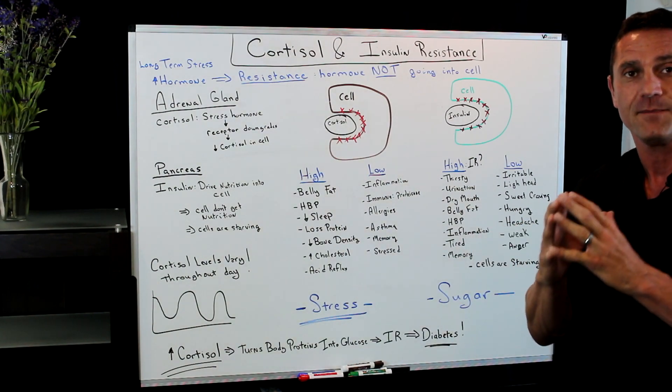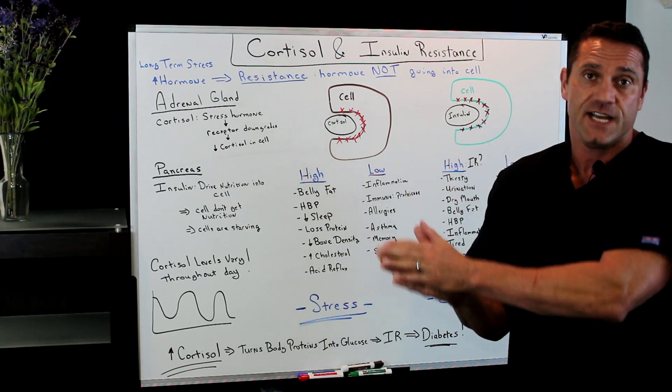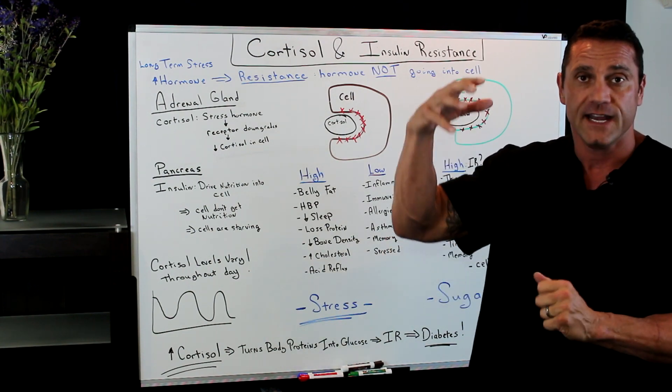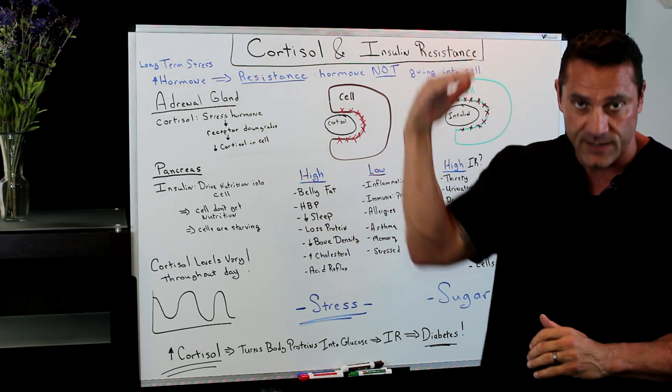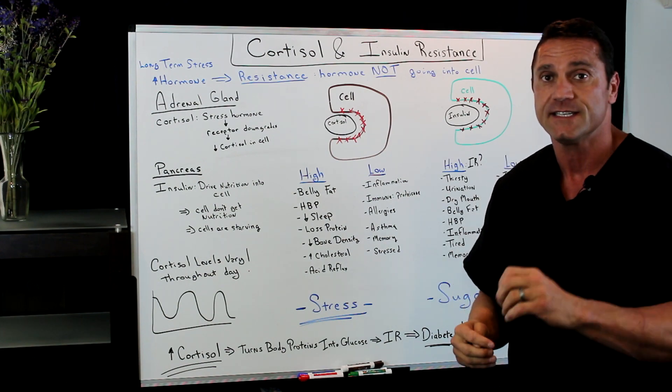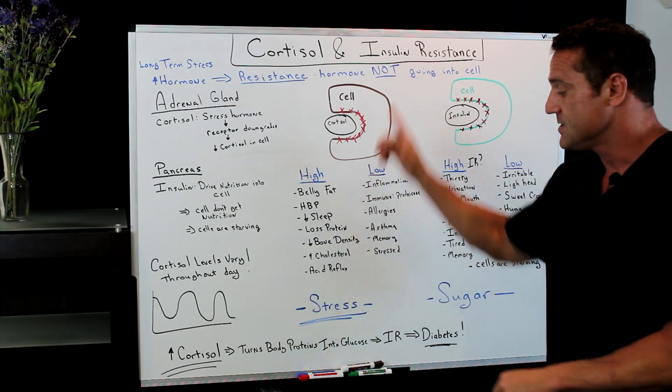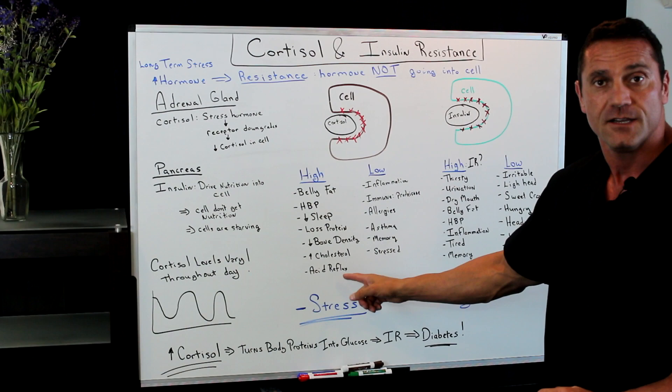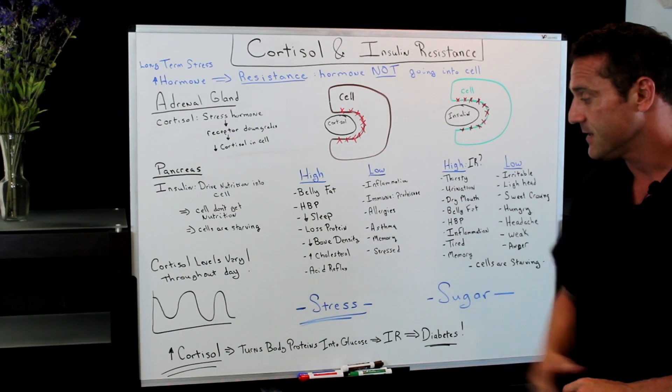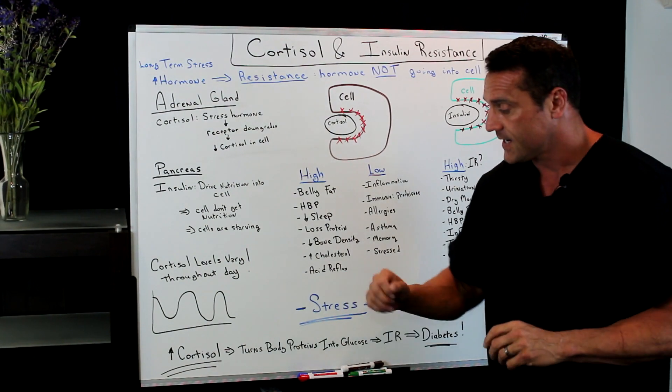How do you calm them both down? First, you change your diet around. Whatever is increasing that insulin, you have to decrease it. What increases insulin? Sugar. Stress, you have to learn how to manage stress. Here's one thing, this is how it all bleeds together.